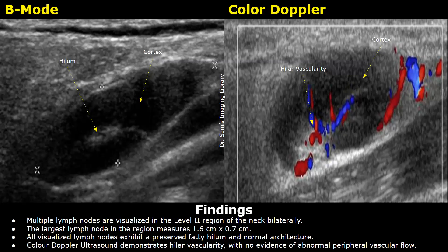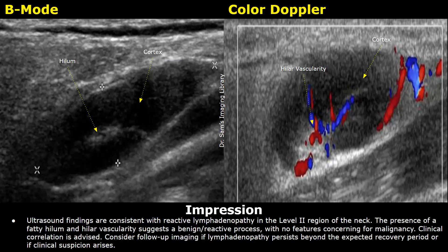Color Doppler ultrasound demonstrates higher vascularity with no evidence of abnormal peripheral vascular flow. The impression: ultrasound findings are consistent with reactive lymphadenopathy in the level 2 region of the neck. The presence of a fatty hilum and higher vascularity suggests a benign or reactive process with no features concerning for malignancy. Clinical correlation is advised; consider follow-up imaging if lymphadenopathy persists beyond the expected recovery period or if clinical suspicion arises.